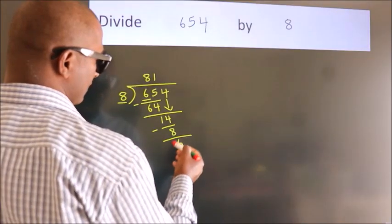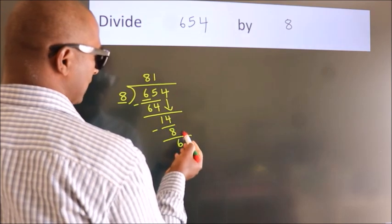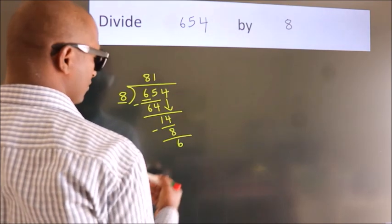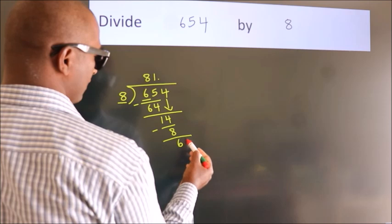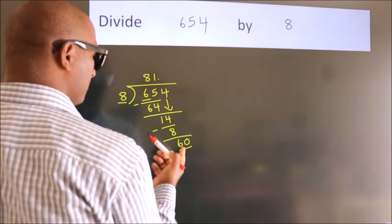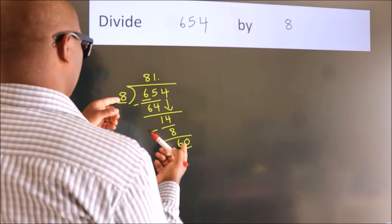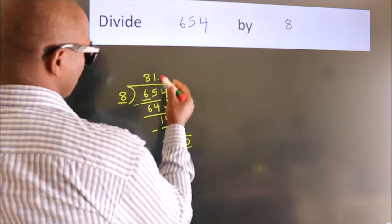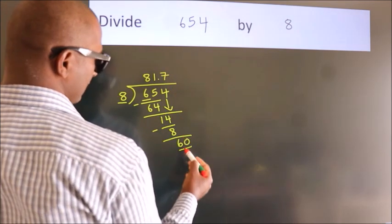After this, no more numbers to bring it down. So, what we do is, we put a dot and take 0. So, 60. A number close to 60 in the 8 table is 8 times 7 equals 56.